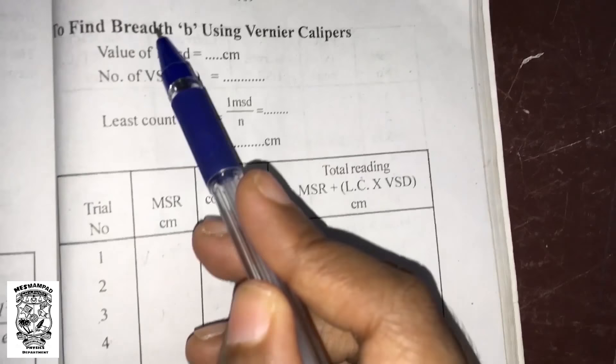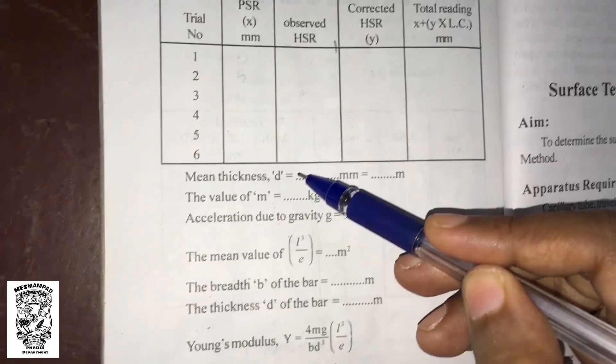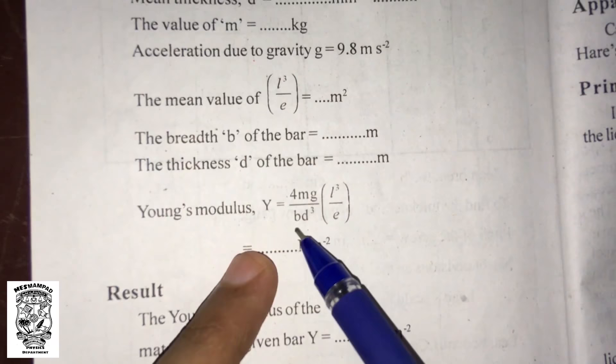For Young's modulus, breadth of the beam is measured using vernier calipers and thickness is found using a screw gauge. The beam dimensions B and D must be found. The equation for Young's modulus is 4Mg divided by Bd cubed into L cubed over E.